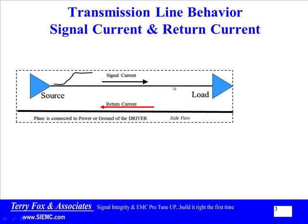The signal current would be like address zero, or clock, or data one, or something like that. The second part is the return current — that is the current that goes from the load back to the source. The signal current goes from the source to the load; the return current goes back from the load to the source. These things have got to go in a complete loop. The return current flows on a reference plane, which is either connected to power or ground of the driver.